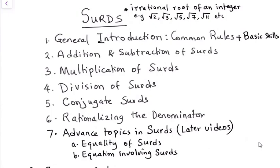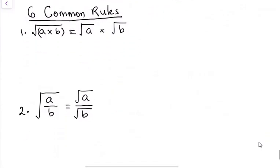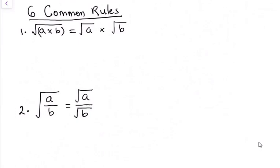So without wasting time, let's get down to business. Let's talk about the 6 common rules that will help us to understand how to handle surds. So this is the first one. When we have a square root and we multiply a by b, we can break it into square root of a and square root of b. So let's take an example.